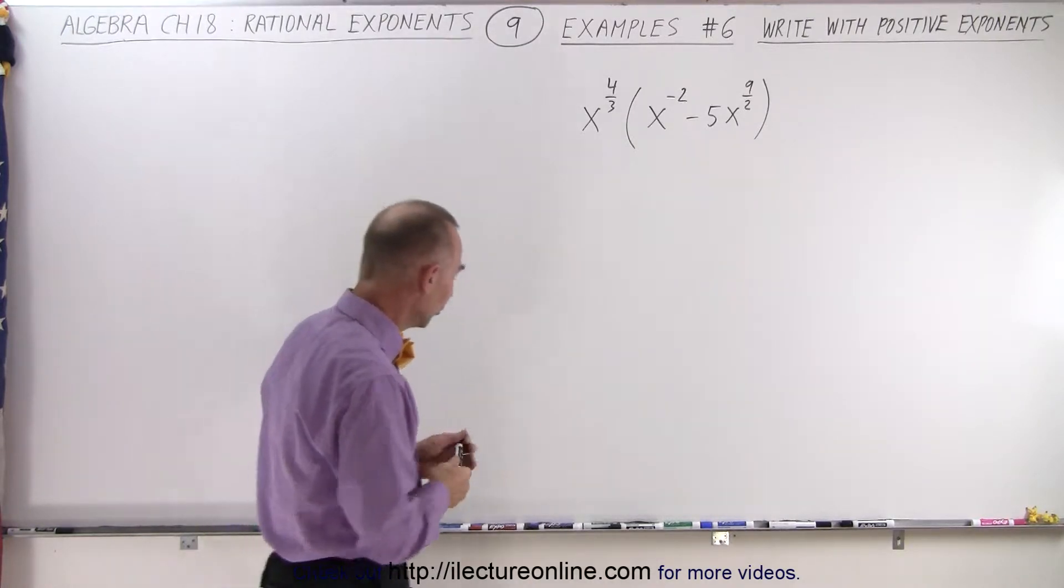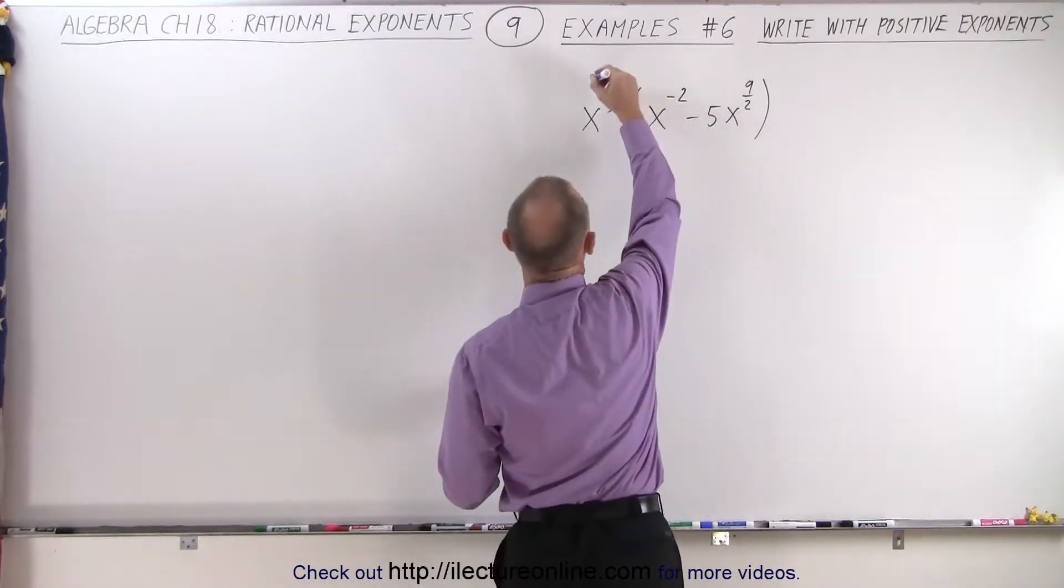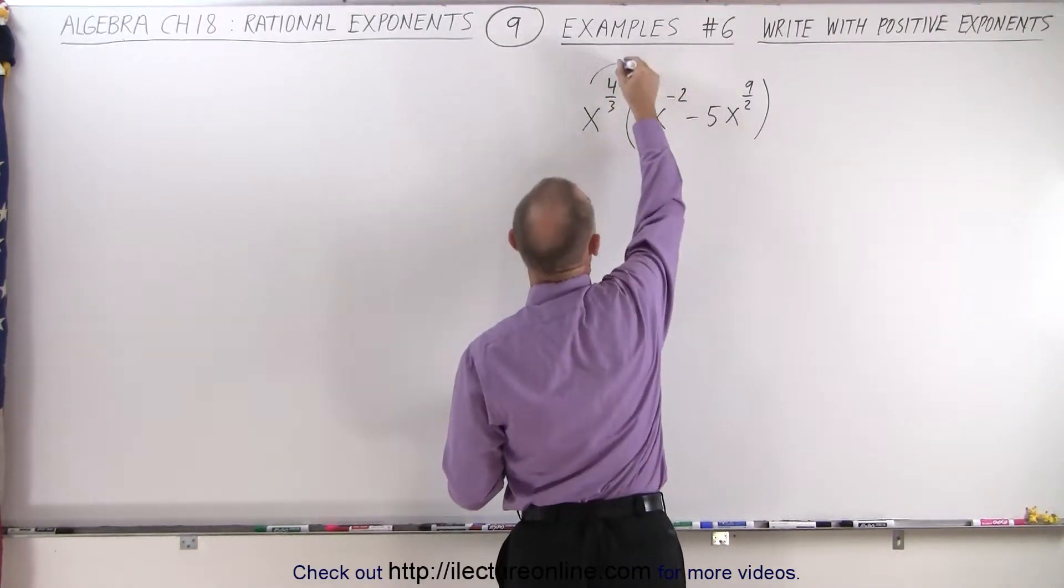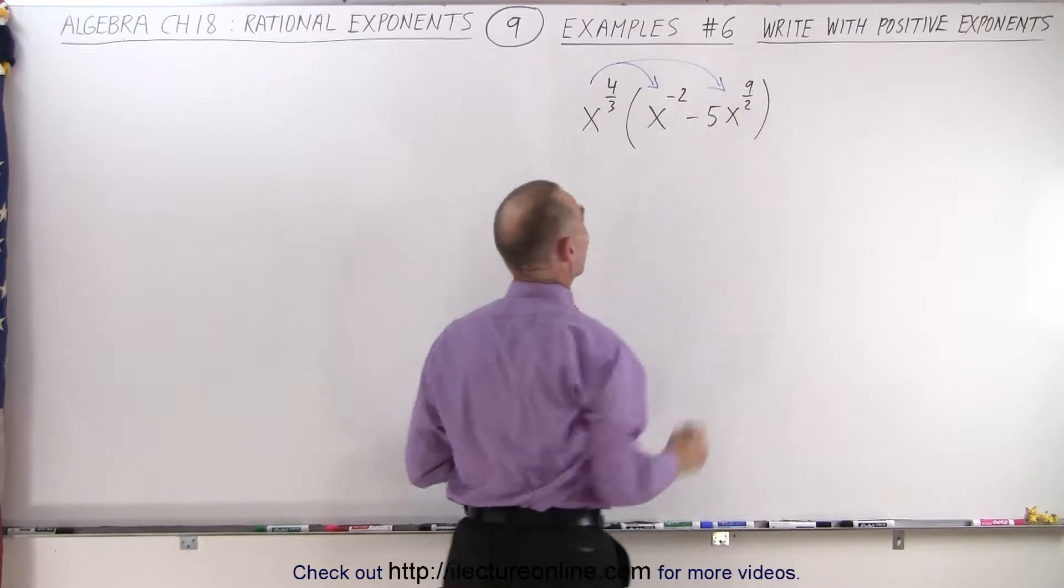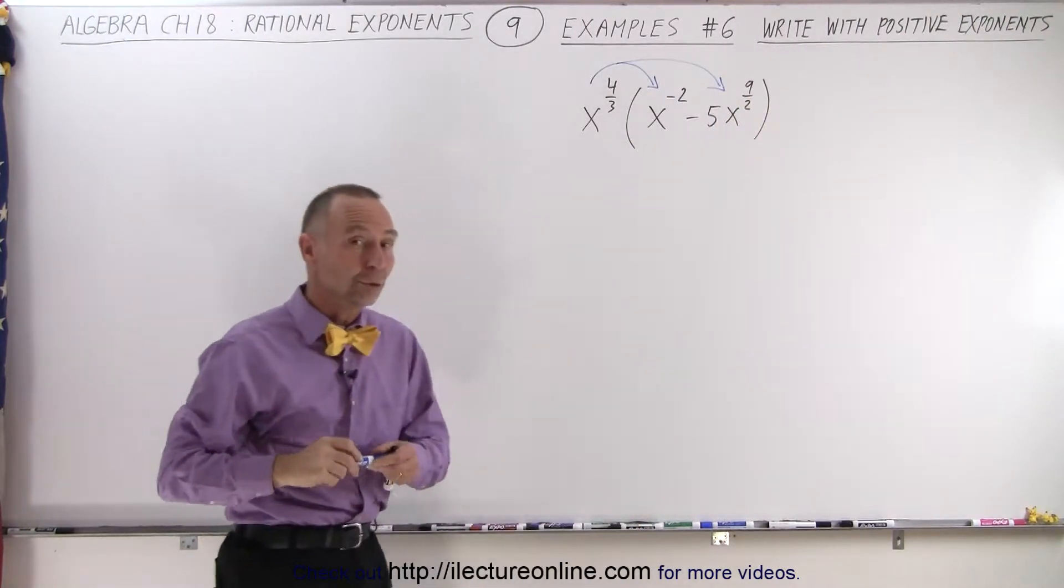We use the same rules as before. We're going to use the distributive property by multiplying this times the first term and this times the second term, exactly like we normally do.